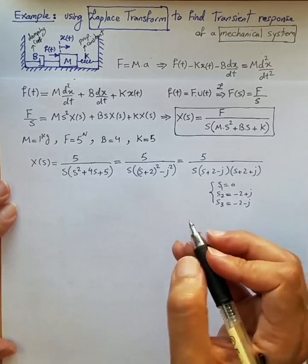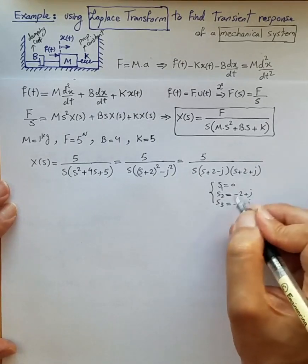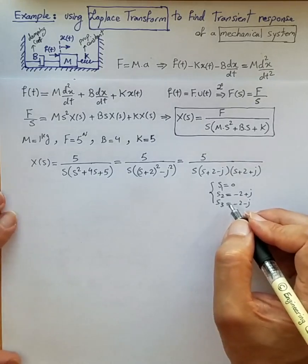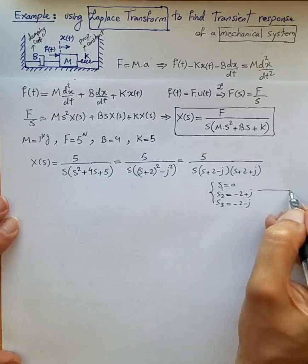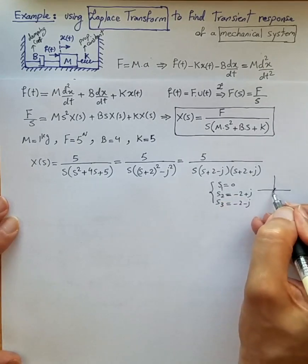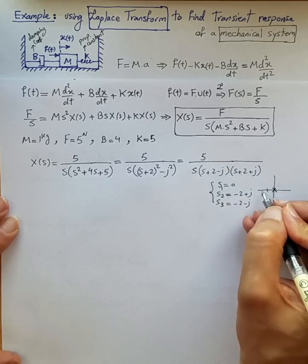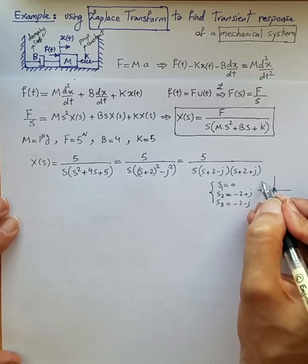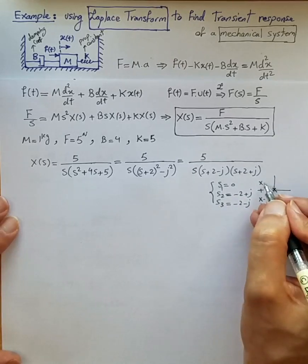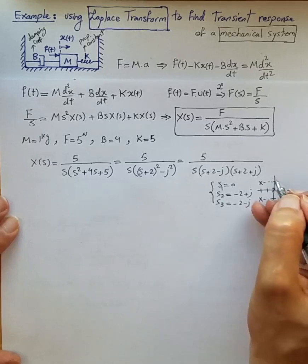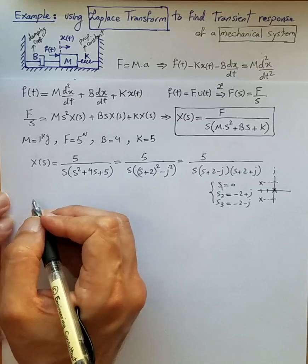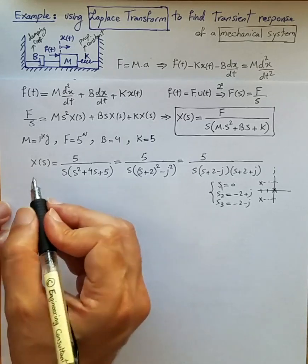As expected, these complex conjugate poles are on the left-hand side of the s-domain, confirming it is a stable system that decays over time. On the s-plane, we have one pole at zero and the other complex conjugate poles at −2+j and −2−j.